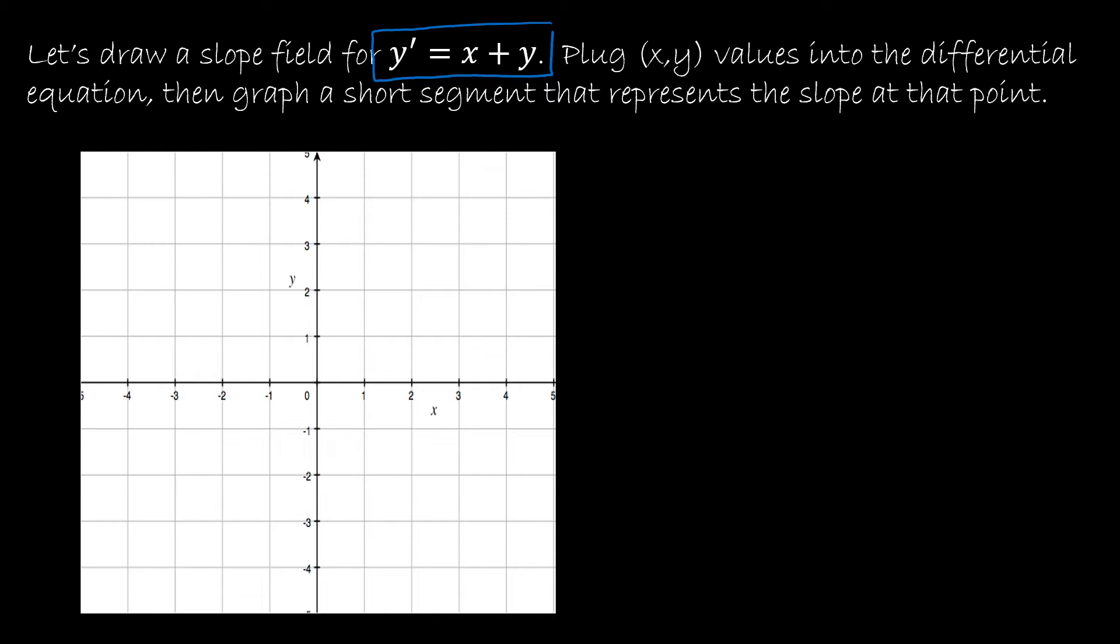For instance, if x were 0 and y were 0, that's the point (0, 0). 0 plus 0 is 0, and a slope of 0 looks like this. If I take the point (1, -1), that's right here. Again, 1 plus -1 is 0, so that would be 0, and this would be 0, and there's a bit of a pattern.